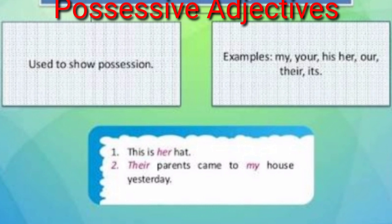The third type is the possessive adjective. It is used to show possession. For example: my, your, his, her, our, their, its. To identify it, we ask 'whose.' For example: 'This is her hat.' Whose hat is this? — Her. So 'her' is the possessive adjective.